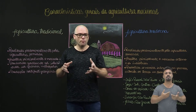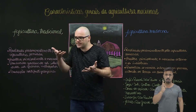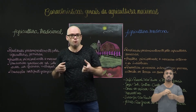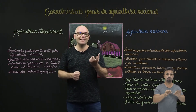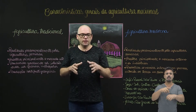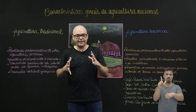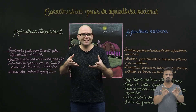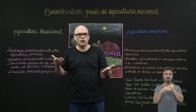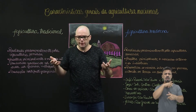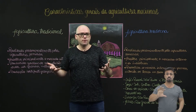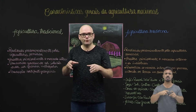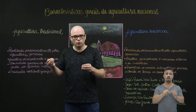Dessa maneira, o Brasil tem essa preocupação em abastecer internamente, mas também tem um foco interessante na exportação. Por isso nós temos características diversas e distribuídas de maneira não necessariamente igualitária nessa produção agropecuária e agrícola em todo o território nacional. Vamos perceber características então de tipos de agricultura pautados para algum determinado ponto.